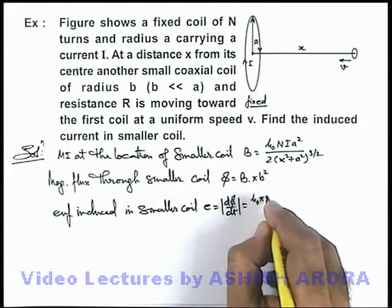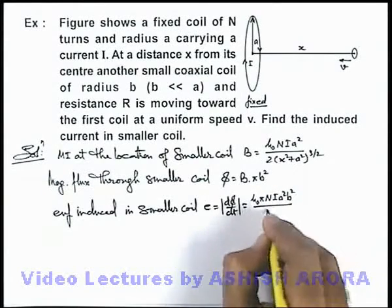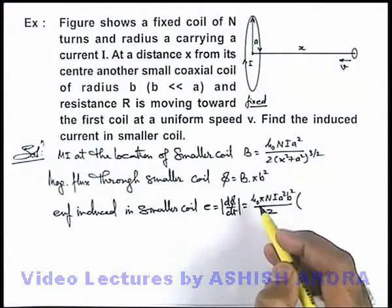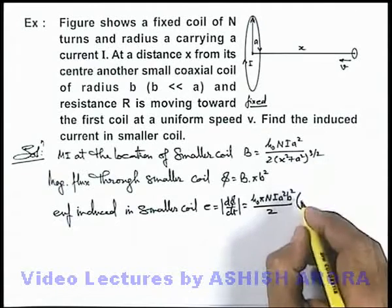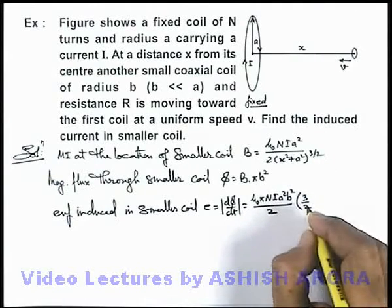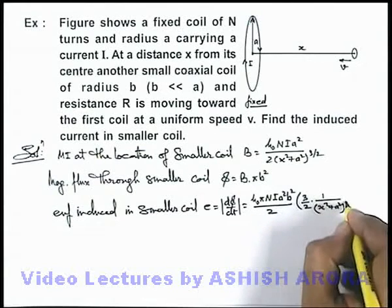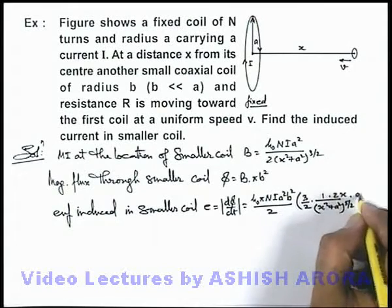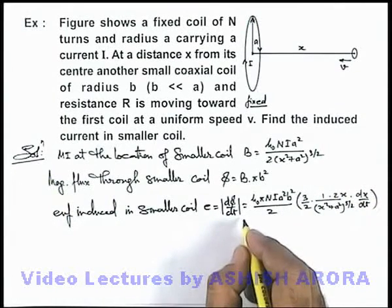This will be μ₀π·N·I·a²·b²/2, and we differentiate 1/(x² + a²)^(3/2). On taking the magnitude of this derivative, it will be 3/2 multiplied by 1/(x² + a²)^(5/2), multiplied by 2x, multiplied by dx/dt, as we are differentiating with respect to time.